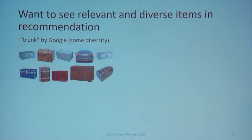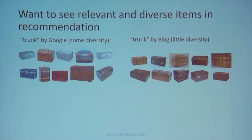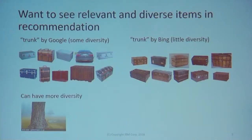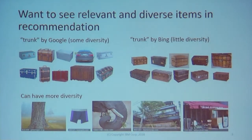We want to see some diversity in the set of items that are recommended to us. For example, these are images found by searching 'trunk' with Google Image Search — these are the top 10 results — and this is the result given by Bing. All of the images are relevant to trunk, but there's not much diversity. Google shows an image of the luggage space of a car, which is one type of trunk, but all other images are a trunk as a box. You can have more diversity: a trunk as the main stem of a tree, men's underwear trunks, an elephant's nose, and things like a trunk hotel and trunk coffee bar.